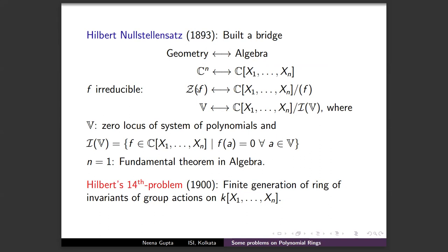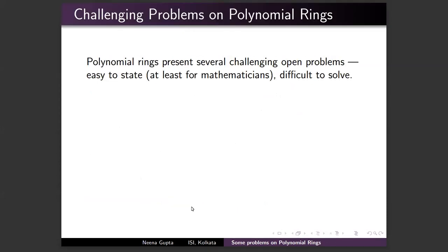Another important result related to polynomial rings is Hilbert's 14th Problem, which concerns the finite generation of rings of invariants of group actions. We will not get into that — let us first discuss the problems we will cover today.